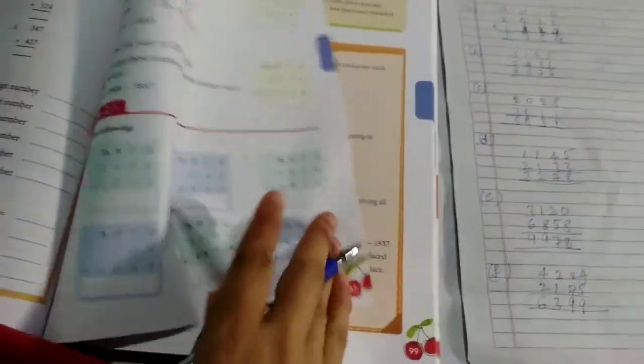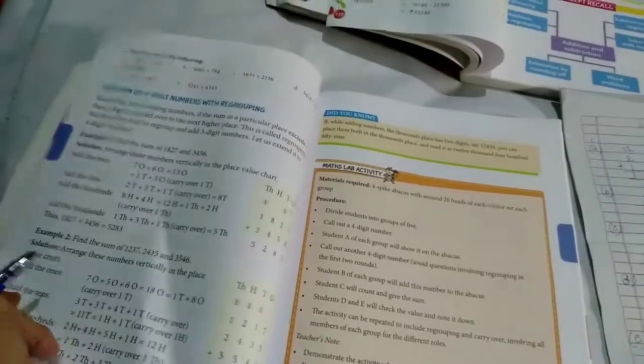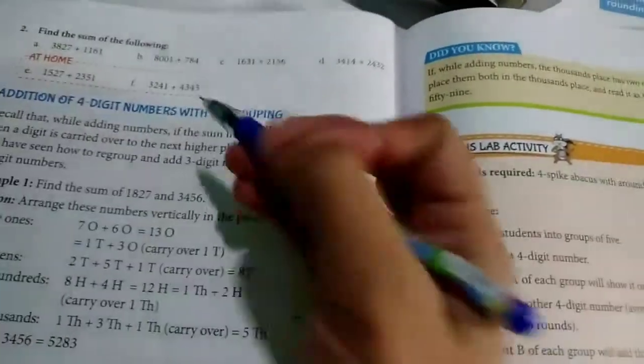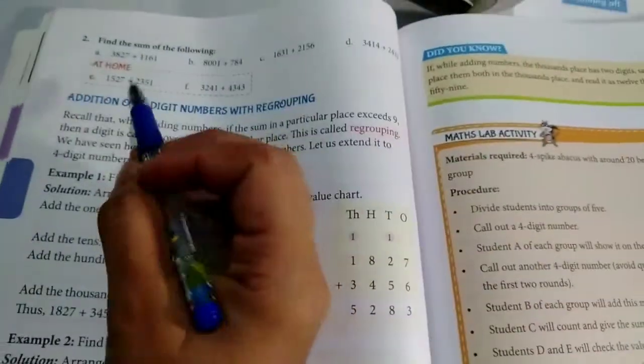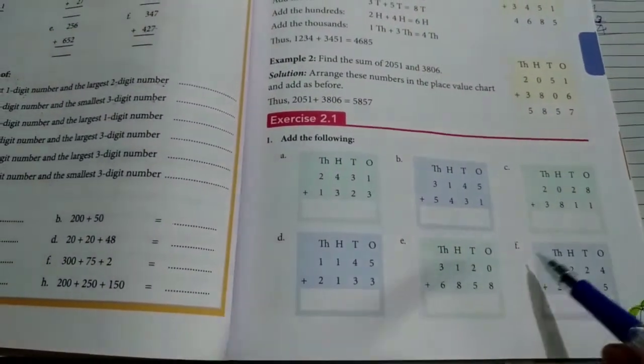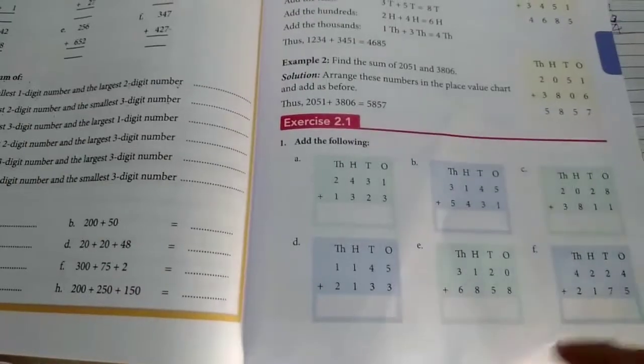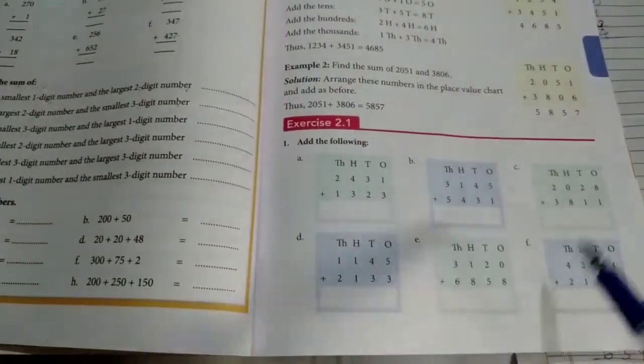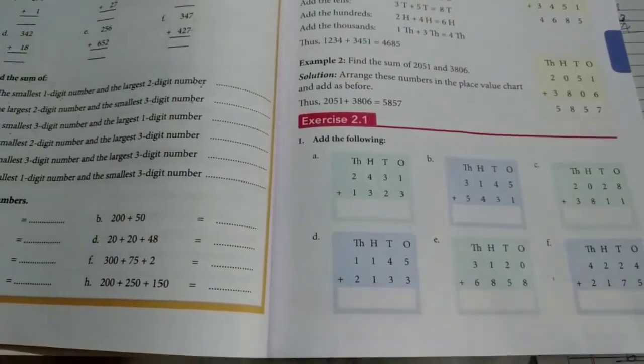Did you understand this? Did you understand how to add the numbers? So this second main, I will explain tomorrow. So till here, till question number F, you have to write 2 times in the homework book. And till here you must complete it in the notes.